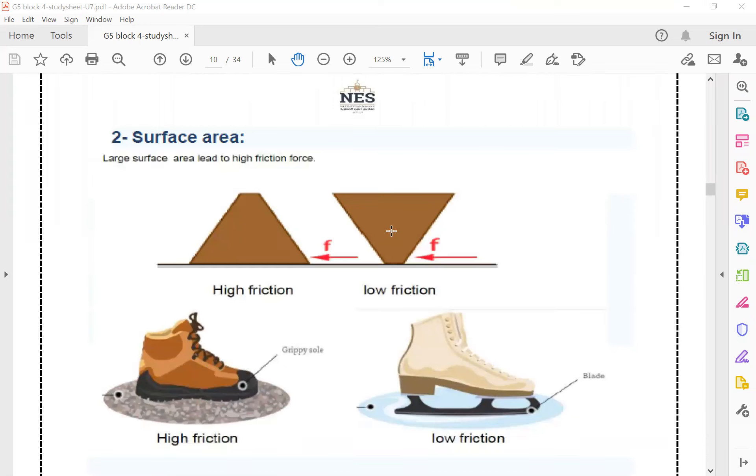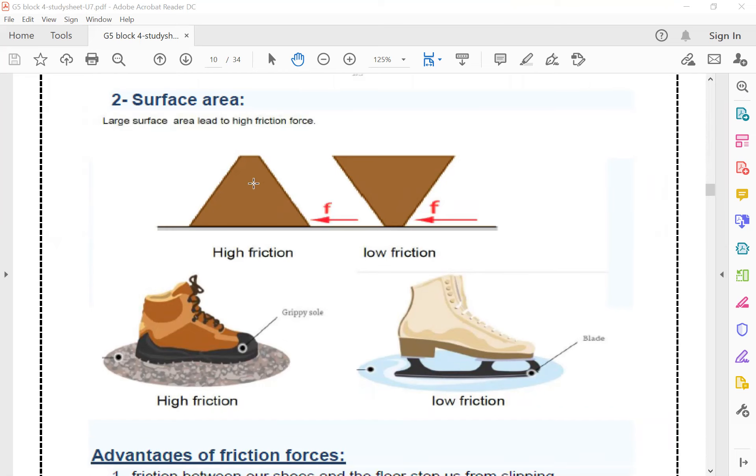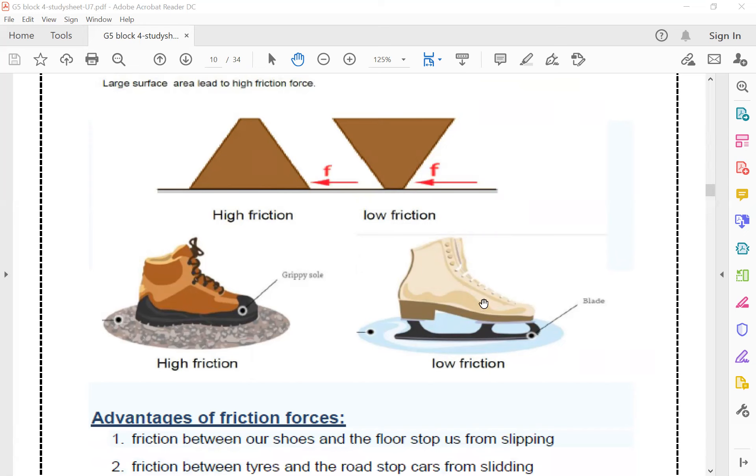The second factor that affects the friction force is the surface area. Large surface area leads to high friction force. If we look here on this object, this one has a large surface area, so it will face a higher friction force with the ground. But this object, which has a small surface area, will face a low friction force. Also, these boats—this one has a large surface area, so it will face a higher friction than this boat, which has a low surface area.